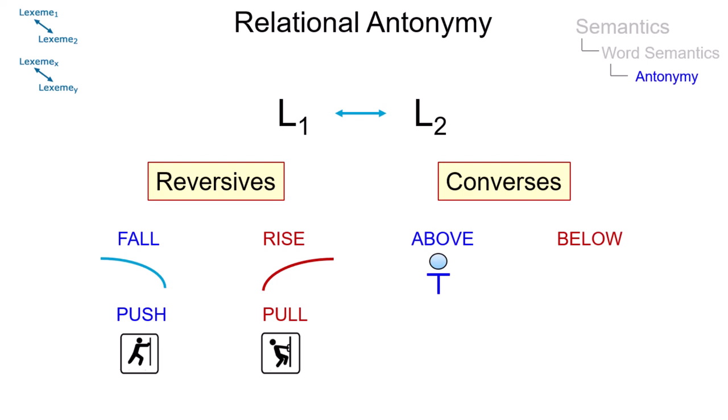If A is above B, then B is below A. If A buys something from B, then B sells something to A.